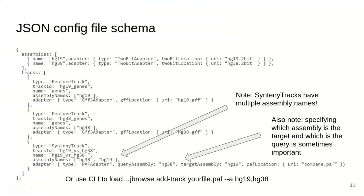For a technical aside, I'd like to cover the config file syntax and how synteny tracks look. In our config file, we have multiple assemblies — for example, hg19 and hg38, each with their own 2-bit file. We have a gene track for hg19 and a gene track for hg38, and then a synteny track that belongs to multiple assemblies using an array of assembly names. The adapter also indicates which assembly was the query and which was the target. Note that we also have an easy-to-use CLI with a simple command syntax for loading data.